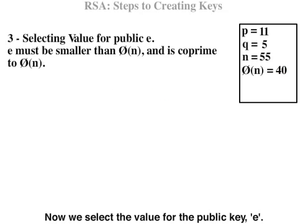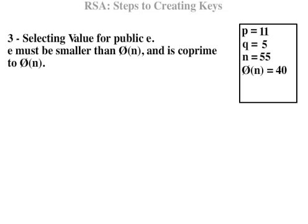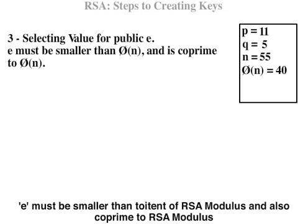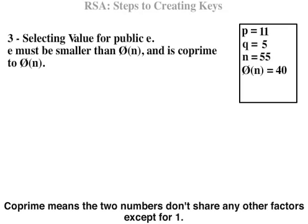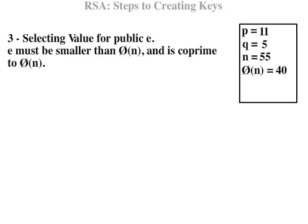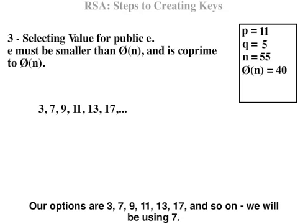Now we select the value for the public key E. E must be smaller than the totient of the RSA modulus and also co-prime to the RSA modulus. Co-prime means the two numbers don't share any other factors except for 1. Our options are 3, 7, 9, 11, 13, 17, and so on. We will be using 7.